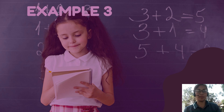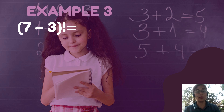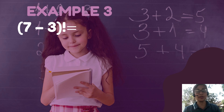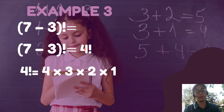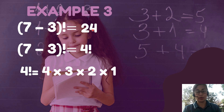The last example before we move on to our practice exercise is example number 3. We have quantity 7 minus 3 factorial. The same rule applies — we deal first with the value inside the parentheses. 7 minus 3 gives you 4, so it becomes 4 factorial. Evaluating 4 factorial: 4 times 3 times 2 times 1, which is 24. So simply, 7 minus 3 factorial is the same as 4 factorial, which equals 24.